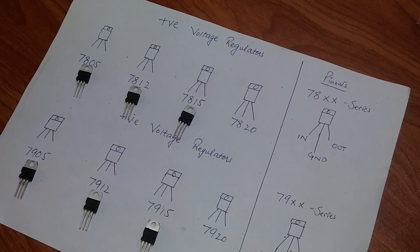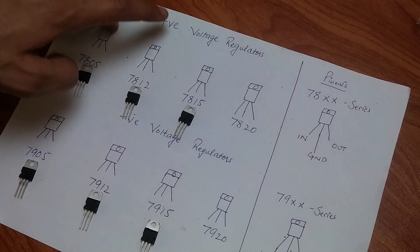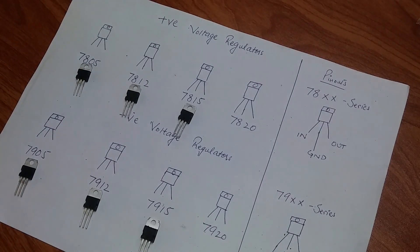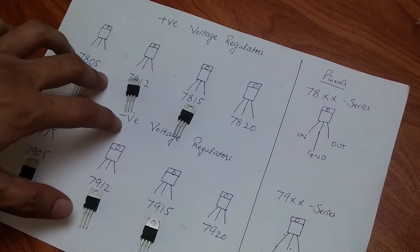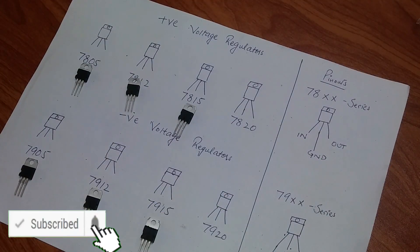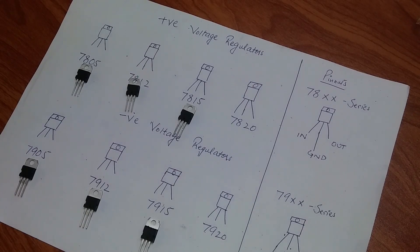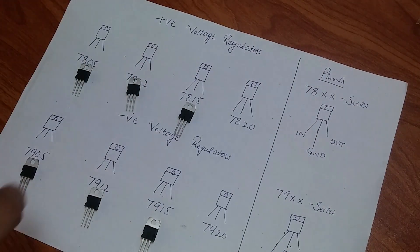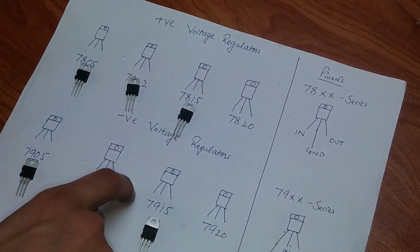The most common regulators are the positive voltage regulators and the negative voltage regulators. Why is the regulation of voltage needed? It is because a normal power supply — made by diodes and capacitors — produces voltage that is irregular, meaning it doesn't provide a consistent stable voltage. We have circuits that require regulated voltage, so we use positive and negative voltage regulators.